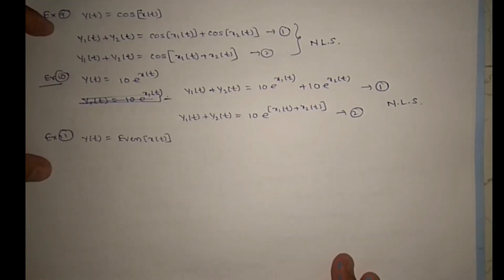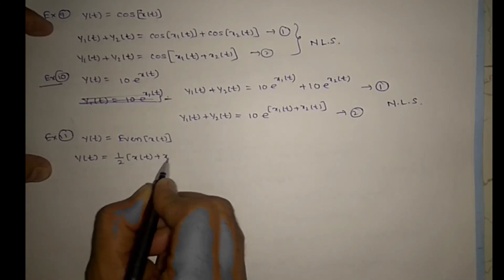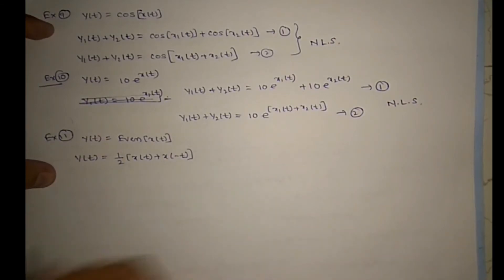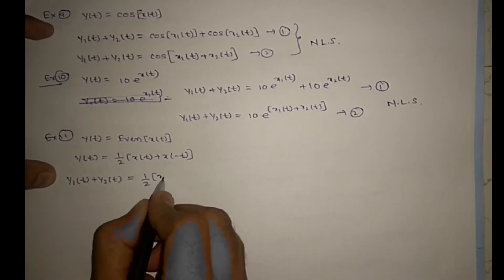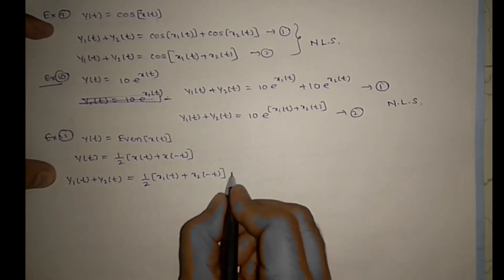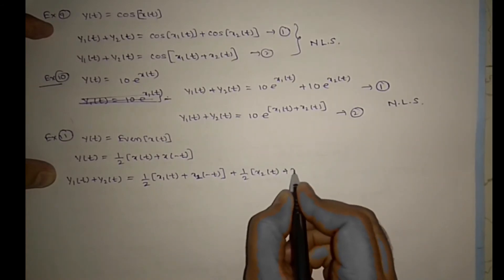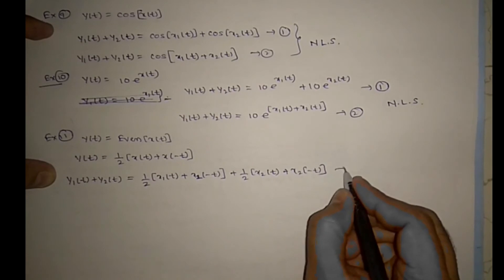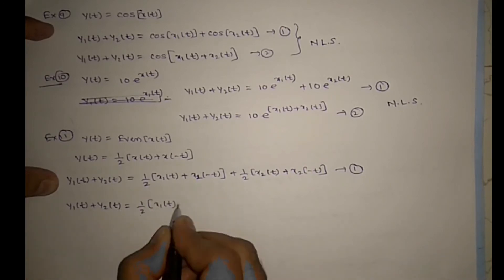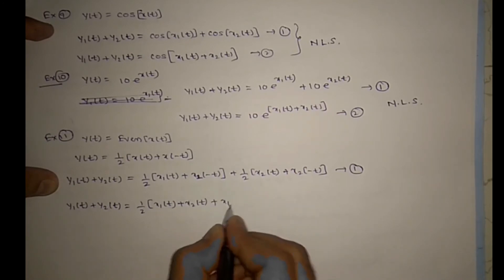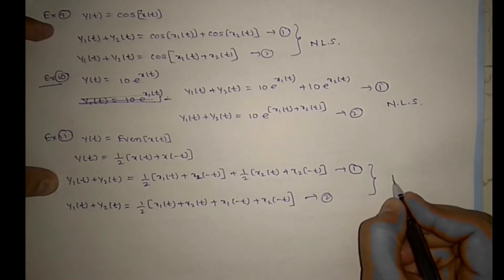Example 11: Y(t) = even part of X(t), which equals [X(t) + X(-t)] / 2. Step 1: Y1(t)+Y2(t) = [X1(t)+X1(-t)]/2 + [X2(t)+X2(-t)]/2. Step 2: replacing gives Y1(t)+Y2(t) = [(X1(t)+X2(t)) + (X1(-t)+X2(-t))]/2. These two equations are the same, so it is a linear system.